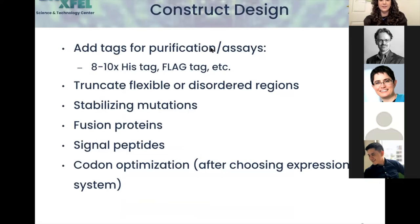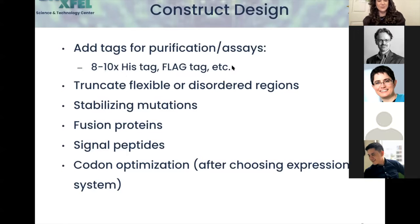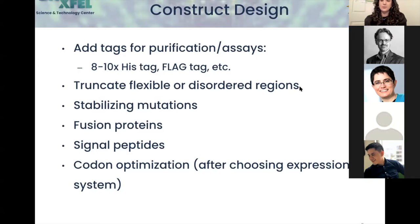For construct design, similar to soluble proteins, you'll probably need to add some kind of purification tag — a His-tag or flag tag, which can also be used for different assays to measure expression levels. With membrane proteins, people often try to add eight to ten histidine residues rather than six, probably because you have a micelle and want it to be more accessible. If you have flexible or disordered regions in the protein that aren't crucial for seeing the structure, you might want to truncate them. That way you have better stability and better luck with crystallization.